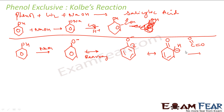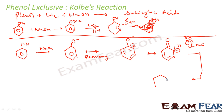Now if we react this with CO2 — since there is a negative charge — the carbanion will attack CO2 in this direction, giving a positive charge on one side and a negative charge on the other. These opposite charges combine to form a new bond.